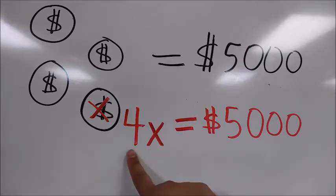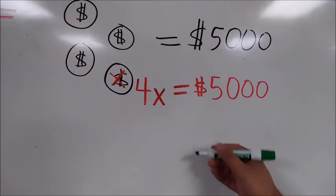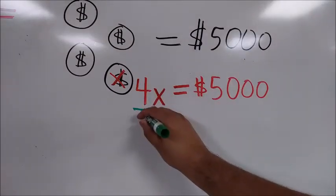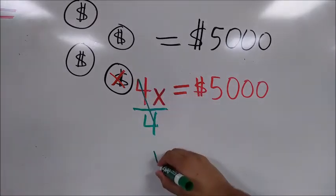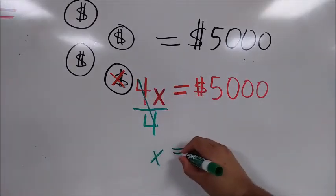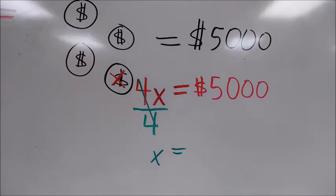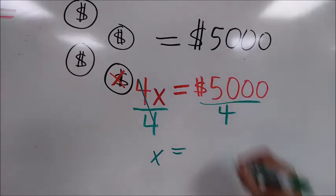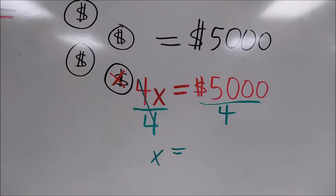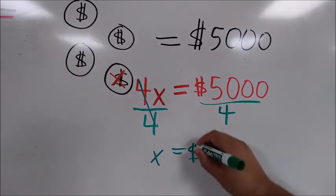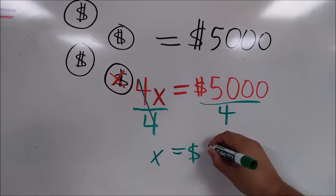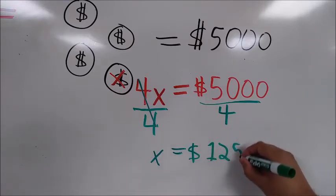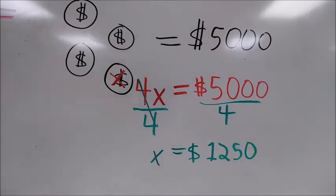In this case, we're multiplying by 4. So to solve this, we're going to divide by 4. So we divide this side by 4, and that cancels out. We're left with nothing but X. However, whatever we do to one side, in order to keep things equal, we have to do to the other side as well. So we're going to divide $5,000 by 4. What do we get? Well, it ends up being $1,250. That's how much each rare coin is worth.